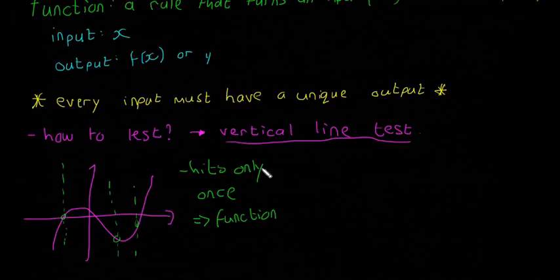That means it's a function. So that's an easy way of just showing that every input must only have one, that every input has a unique output. It's called just a vertical line test.